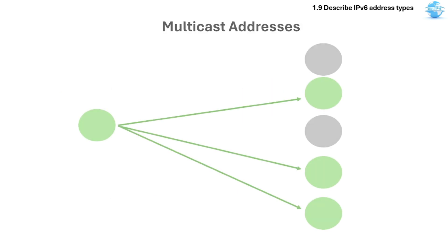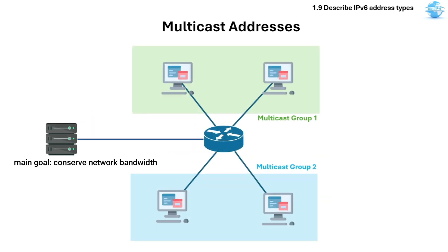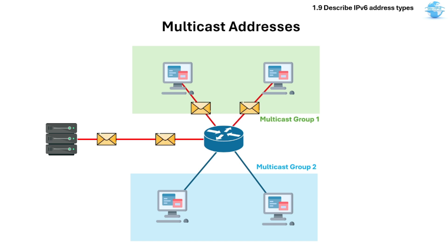Then there's the Multicast address. This delivers packets to a group of devices, but not all like Broadcast, and not just one like Unicast. The main goal of Multicast is to conserve network bandwidth. Data is sent from the sender in a single transmission and delivered to an entire group of receivers. Multicast is mostly used in streaming, routing updates, or IPv6 neighbor discovery.